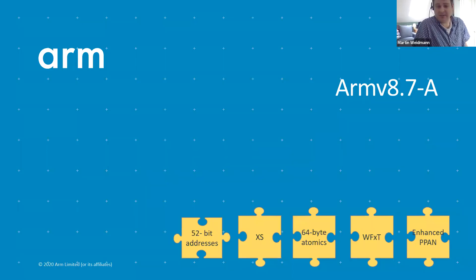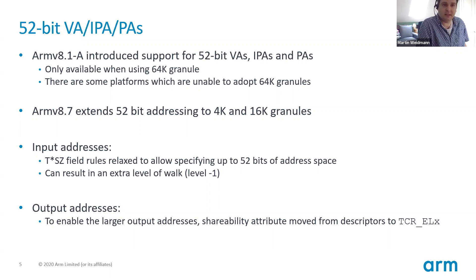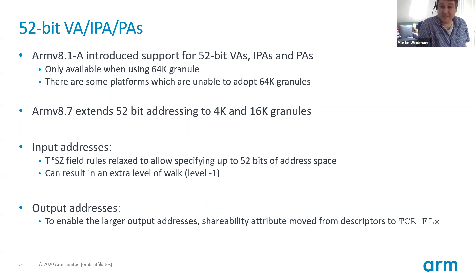Starting with the 8.7 features: the first relates to 52-bit addressing. The original 8.0 architecture had support for 48-bit virtual and physical addresses; we expanded that to 52 bits in ARMv8.1, but there was a limitation — specifically that you could only use it if you had a 64k translation granule. That's fine for some operating systems and distributions, but notably things like Android use a 4k granule and were therefore unable to access this feature.